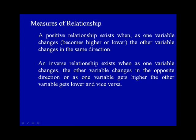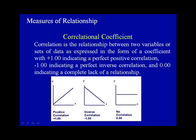However, depending upon the variables being analyzed, a high correlation might indicate a cause and effect relationship. The correlation coefficient: correlation is the relationship between two variables or sets of data as expressed in the form of a coefficient, with plus one indicating a perfect positive correlation, minus one indicating a perfect inverse correlation, and 0.00 indicating a complete lack of a relationship.